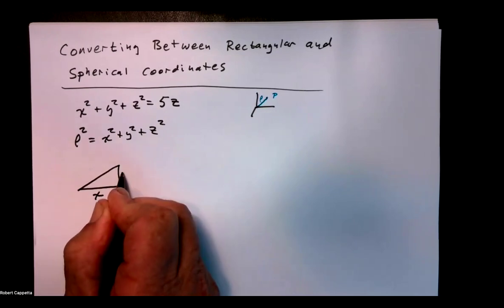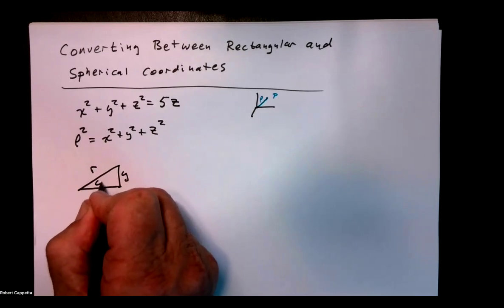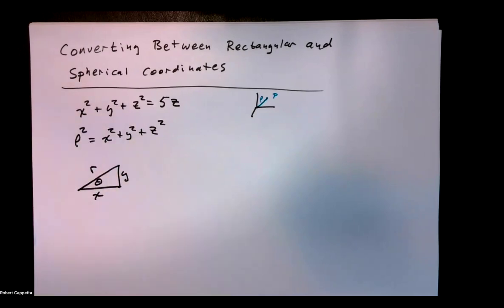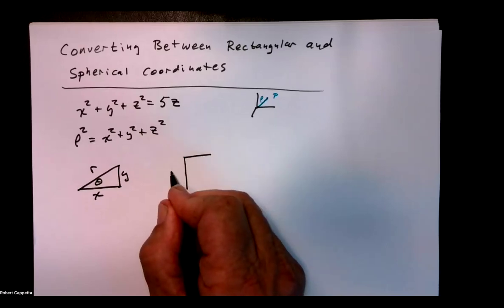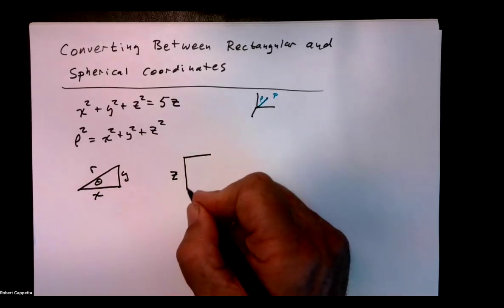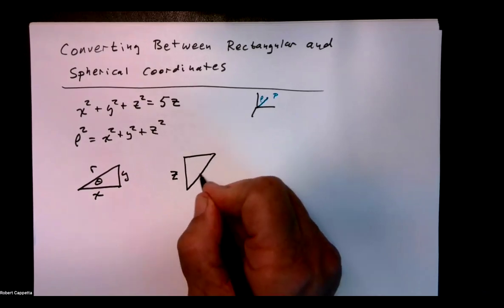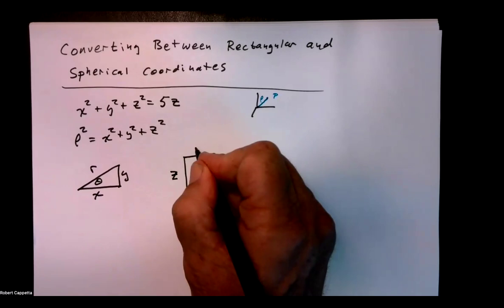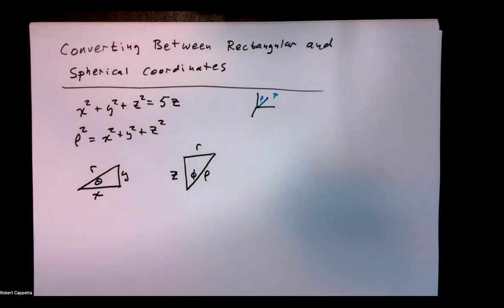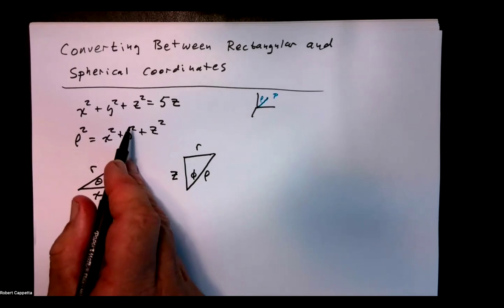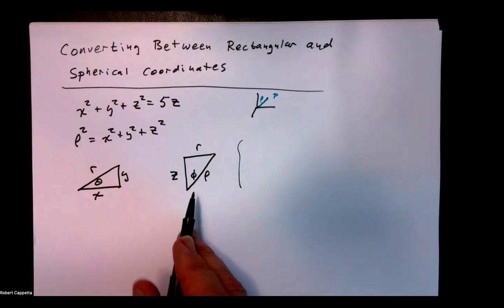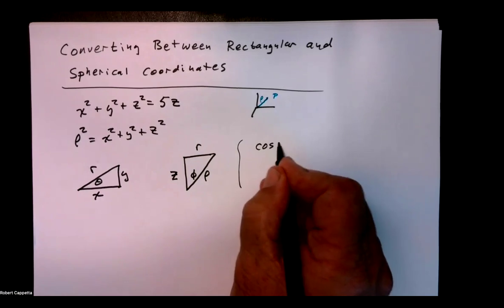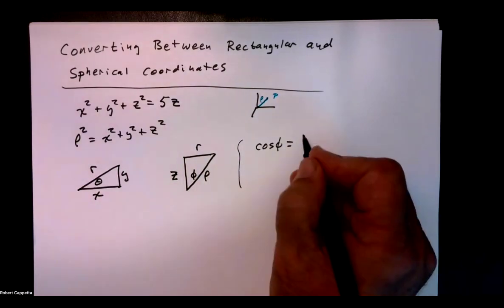We have our x, y, r, theta triangle. And then we also have z, rho, phi, and r. You'll notice x squared plus y squared plus z squared is rho squared, so I can make that substitution. Now how can I work with z? Looking at my triangle, we're going to say cosine of phi is z divided by rho.